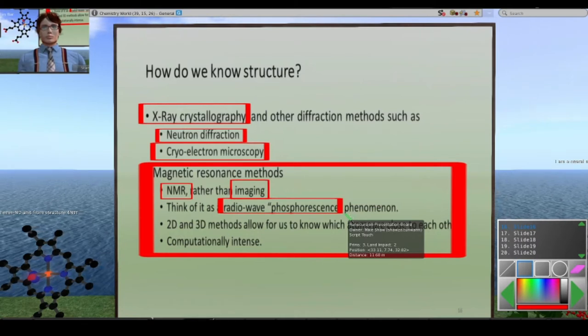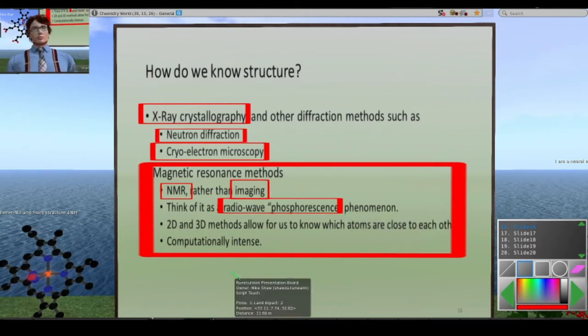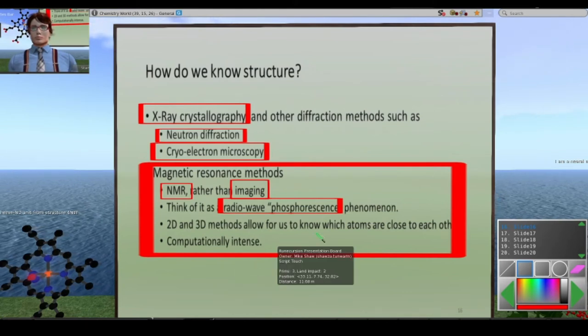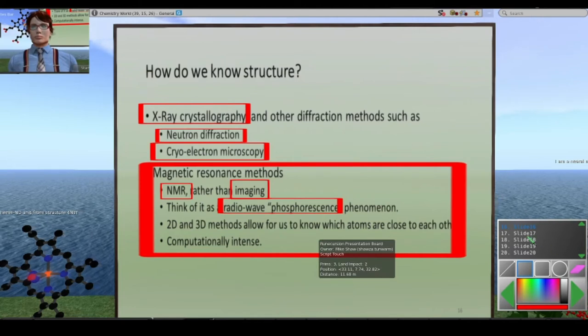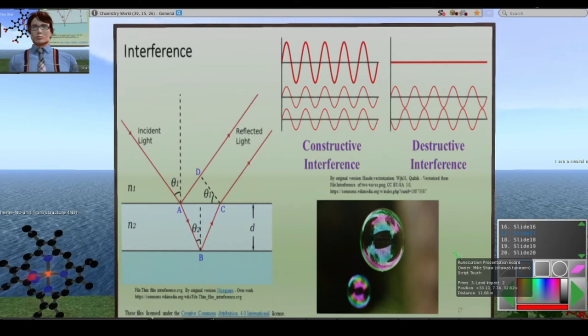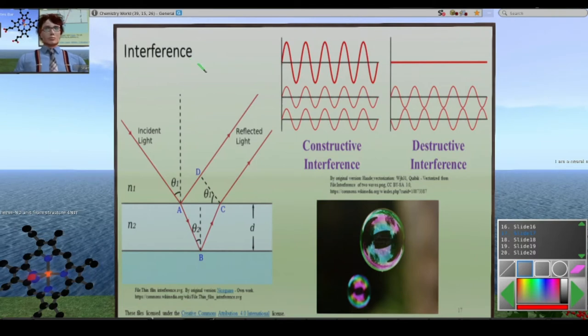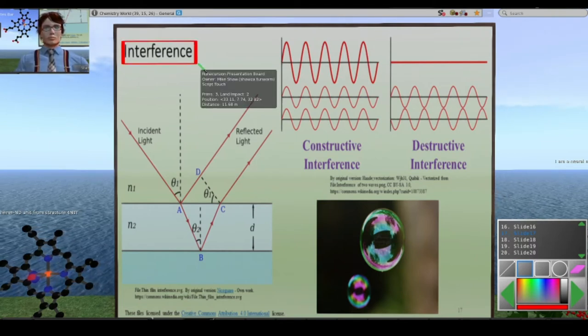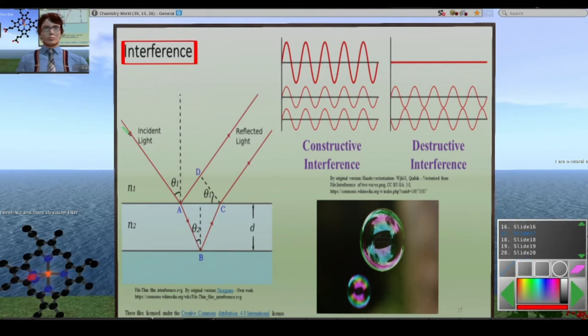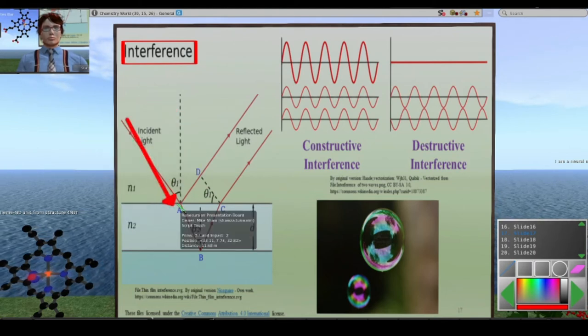For proteins, you can do two-dimensional, three-dimensional methods, way out of the scope of this talk, but you can figure out which atoms are close to each other and therefore deduce features of the structure. A few words about x-ray crystallography. It is basically, it basically rests on interference patterns. I don't have Bragg's law up here, but Bragg's law is important. How this works? Think of an x-ray beam coming into a surface. The x-ray beam could bounce off a top layer of a surface or a bottom layer of the surface.